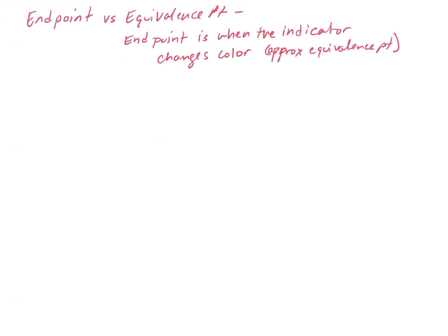There's an important distinction between an endpoint and an equivalence point. The equivalence point is when you reach stoichiometric equivalence — moles of titrant equal moles of analyte. The endpoint, on the other hand, is when you get a visual color change in the solution when using an indicator. For most cases this will be very close to pH 7, which is where we have the endpoint for a strong acid or strong base reaction. It's a pretty good approximation of the equivalence point, but slightly off because you need to go a little past pH 7 to deprotonate the phenolphthalein and get the color change to pink.